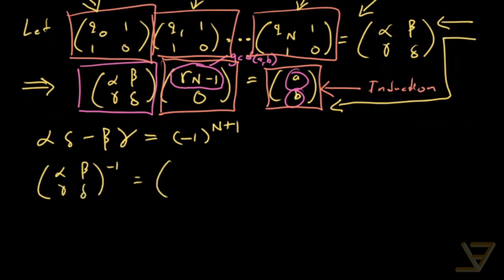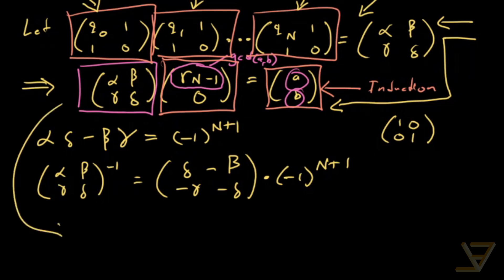The inverse is equal to [[delta, -beta], [-gamma, alpha]]. You can check that this, oh, this is times negative one to the n plus one. You can check that these two matrices multiplied together do give the identity matrix, which is [[1, 0], [0, 1]].